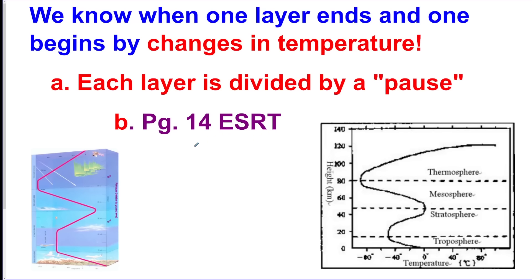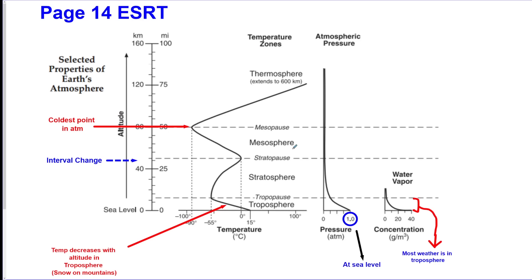There's four layers of the atmosphere and they're divided by temperature change. You have to know how to read this chart on page 14 of the reference table. It looks like this. You should be very familiar with this. Know the temperature, how that works, how to read the line, how to know about the pressure and the water vapor, how to know how the altitude works, the pauses.